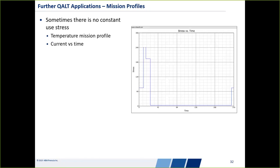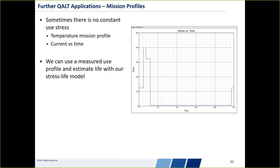Another neat application is for mission profiles or time-varying stresses. In many situations, we don't have a constant use stress — not a single temperature or stress level the product always operates at. We can describe the mission profile as a function of time in the software and still come up with a life estimate given that mission profile. If we have, say, temperature versus time, we can see how many repeats of that cycle we'd survive according to our test data. The way this works is by adding up the damage accumulated at each stress level — damage accumulates quickly at high stress and slowly at low stress — giving us a probability of failure.